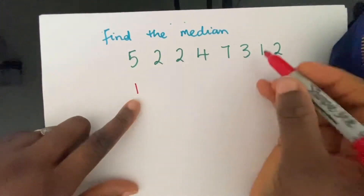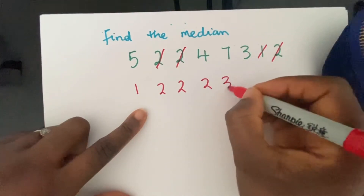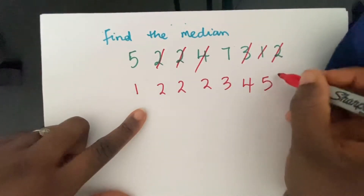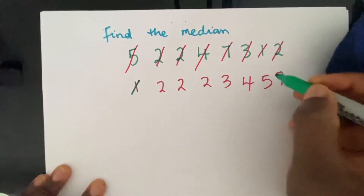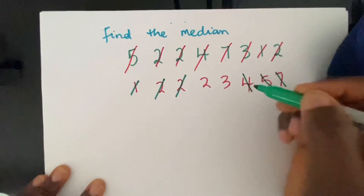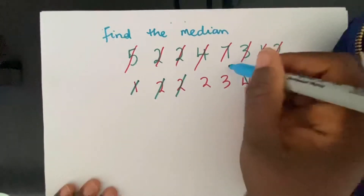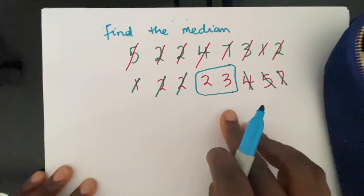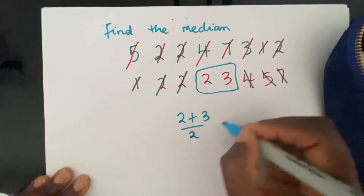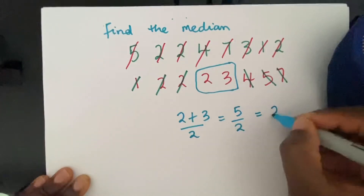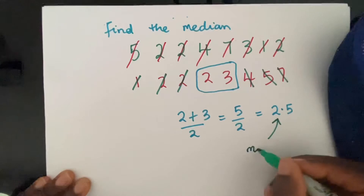So we've got 1 here, then 2, 2, 2 — I'll cross them off — and 3, cross that off, 4, 5 and 7, cross them off. I can then start to cross them off on the edges to find which number is in the middle, and I end up with 2 and 3 in the middle. So what I have to do now is add them up and divide by 2 to find the number bang in the middle. So 2 plus 3 divided by 2 equals 5 divided by 2, which is equal to 2.5. So the median is 2.5.